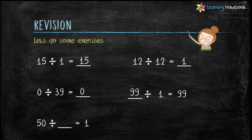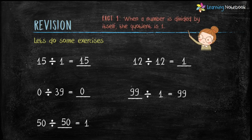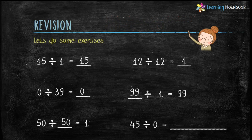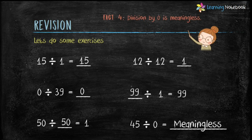Let's move to the next one. 50 divided by blank equals 1 — answer is 50. It is based on fact number 1, when a number is divided by itself, the quotient is 1. And the last one is, 45 divided by 0 equals — answer is meaningless, because division fact number 4 says, division by 0 is meaningless.